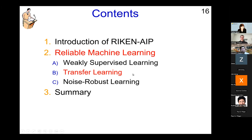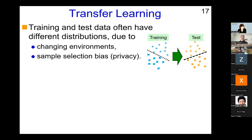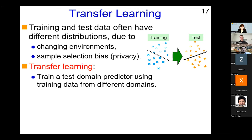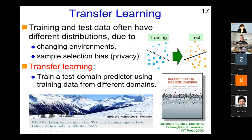The second topic is transfer learning — learning from biased data. Consider training and test data with different distributions, perhaps due to changing environments over time or sample selection bias due to privacy reasons. Transfer learning aims to train a test-domain predictor using training data from a different domain. This is not a new topic — I organized a workshop on this more than 15 years ago at NIPS and we produced an edited volume. Nowadays, transfer learning is becoming a new boom again.